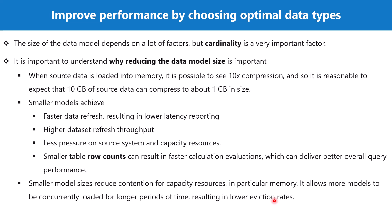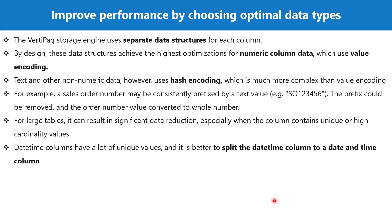All of this is important because it is associated with column cardinality, and the data type is a very important function of cardinality. The VertiPaq engine uses different data structures for each column, so if you have different data types across your columns, each column will use a different data structure within the VertiPaq storage engine. Let's look at what those data structures are.